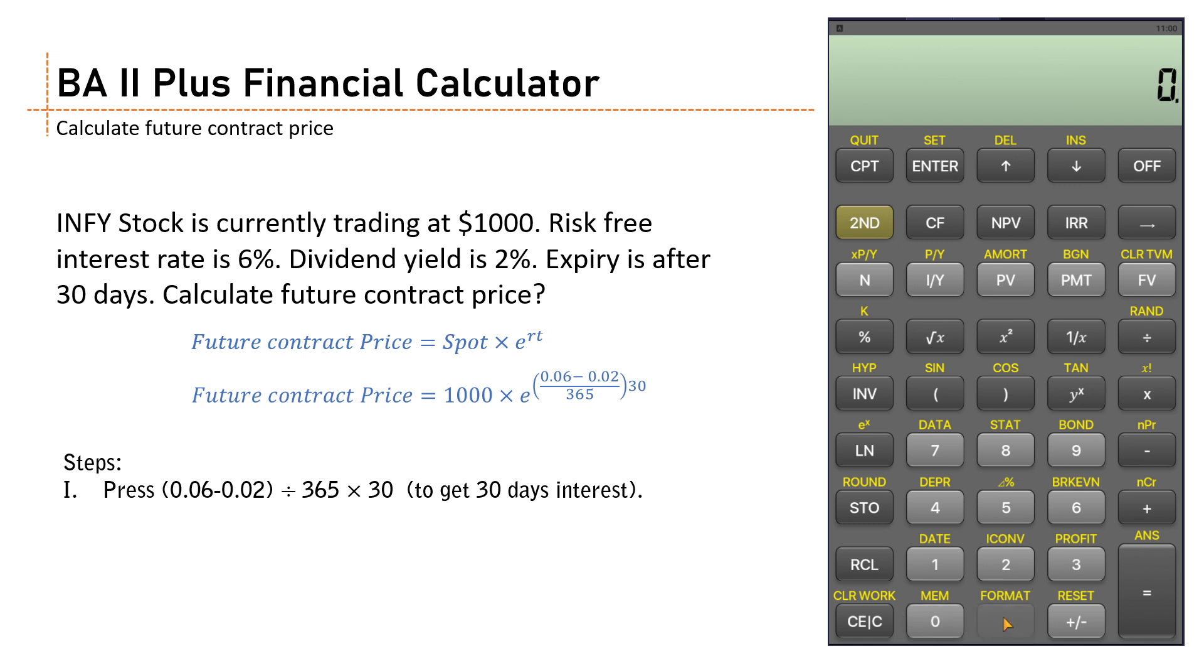Enter 0.06 and now obviously reduce the dividend because dividend yield is reduced with the interest, so minus 0.02. So you get almost 4 percent here.